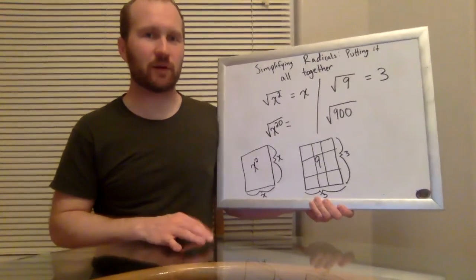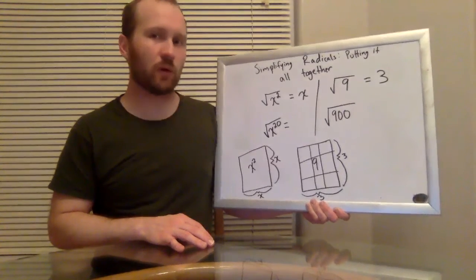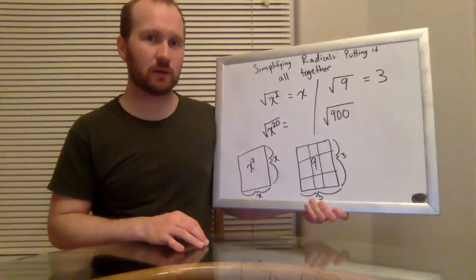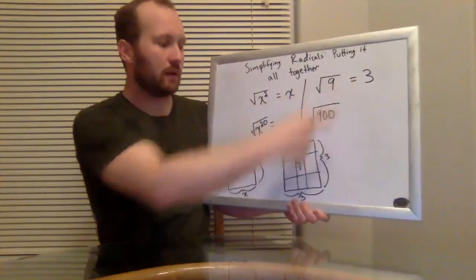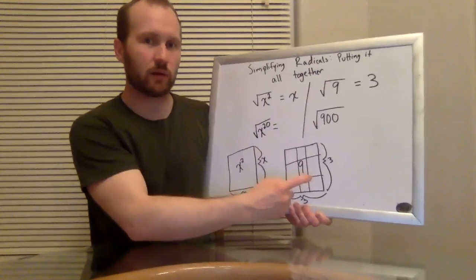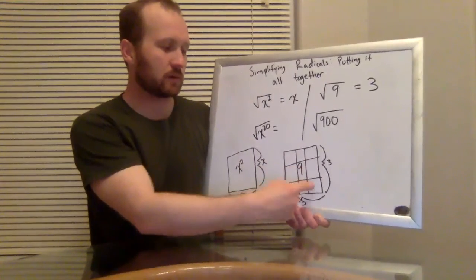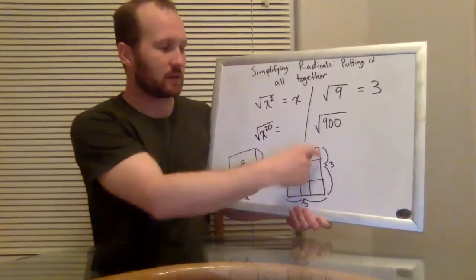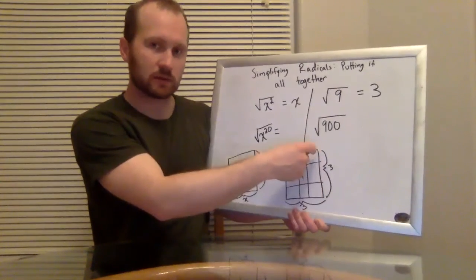I want to go back to the very beginning of this. I want to go back to just simply, what is the square root? So if I have the square root of a number like nine, that's three and that's because if I have a square with an area of nine, so nine square units, that means each side of that square is three units long.